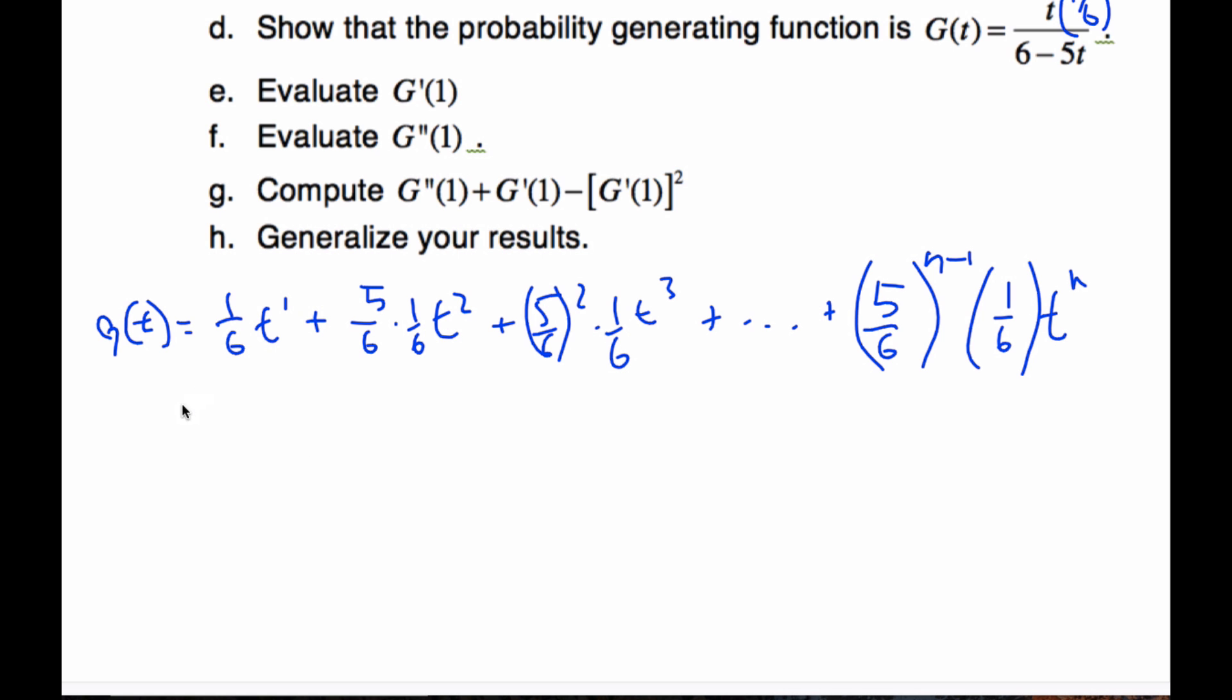And so what I'm going to do next is I recognize that there is a factor of one-sixth T, and I'm going to pull that out from every single scenario. When I do that, I get one plus five-sixths T plus five-sixths squared T squared, so this gets reduced by one plus all the way up to five-sixths to the N minus one. This is out, and I've taken one of these T's, and this is to the N minus one.